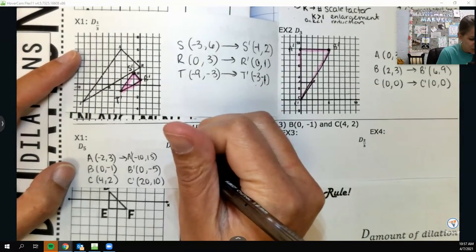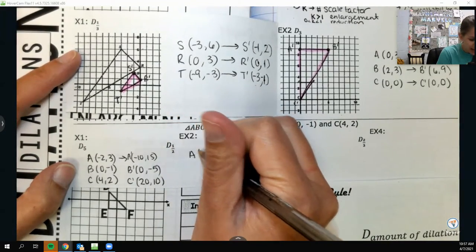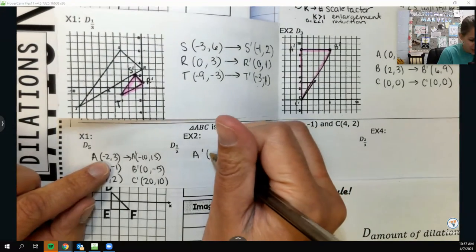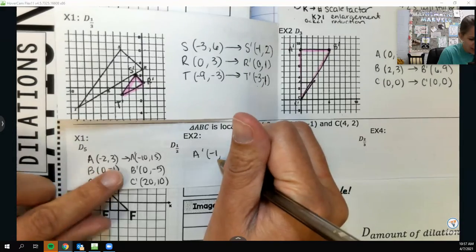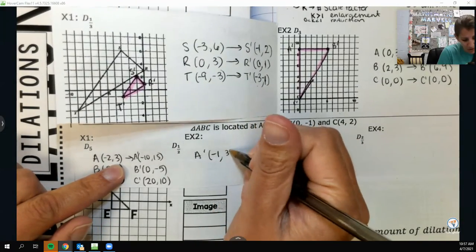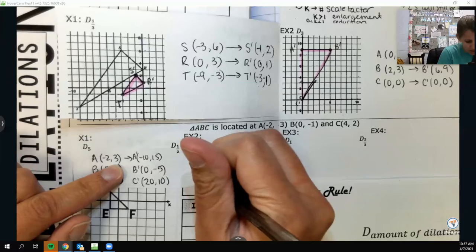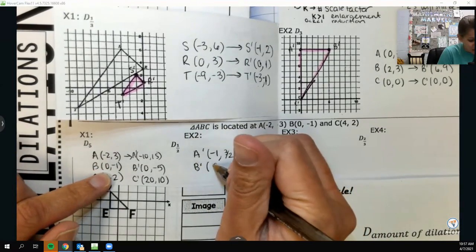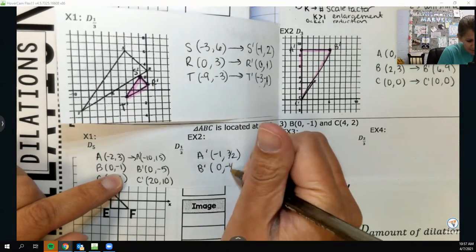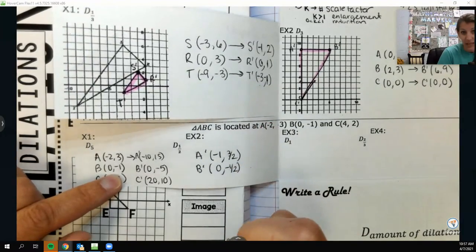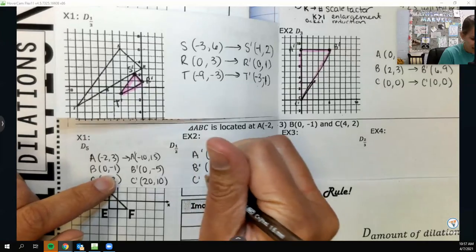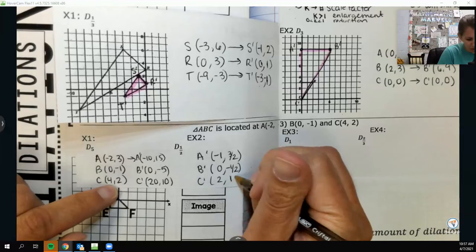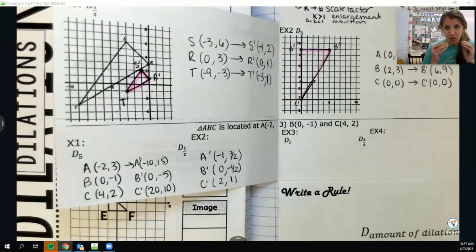Alrighty. So maybe I don't even need to graph. Maybe I can just write out my ordered pairs. So using that same triangle we have every time. If A is at negative 2 comma 3. B is at 0 comma negative 1. And C is at 4 comma 2. Here they're showing me I'm doing a dilation of 5. So it's going to be an enlargement. And I'm just going to multiply everything by 5. So negative 10, 15. B prime will be at 0 negative 5. And C prime will be at 20 comma 10. Real big.